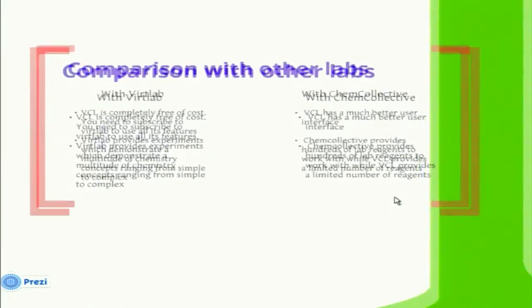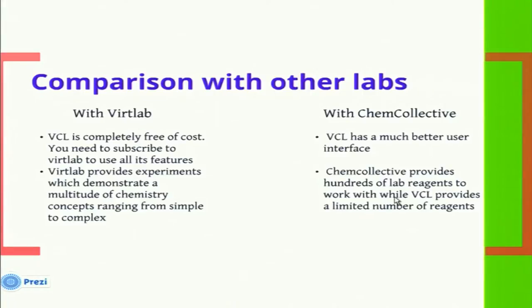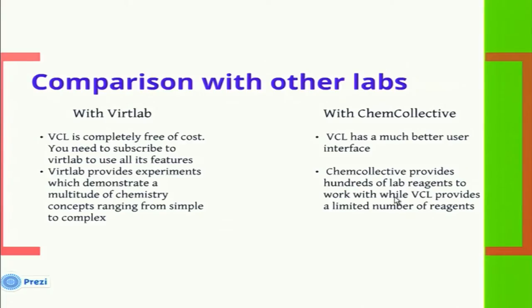Before we began with the project, we looked for other simulators of the chemistry lab and found two major ones: Worklab and Chem Collective. The virtual chemistry lab wins hands down on its user interface — it is very simple to use and very attractive. Both Worklab and Chem Collective do have a user interface, but it is very complex. One limitation of the virtual chemistry lab is that we are still limited with the knowledge of chemicals, though we have a chemical class and the knowledge can be extended.